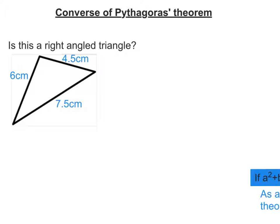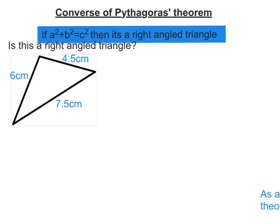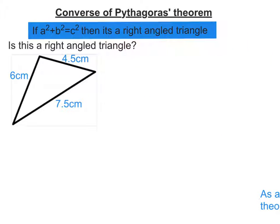Well, the converse of Pythagoras' theorem says the other way around, that if you have A squared plus B squared equals C squared, then it's a right-angled triangle, and we use that to prove if something is right-angled or not.